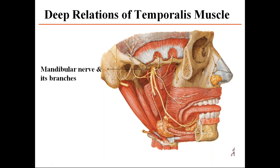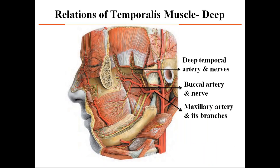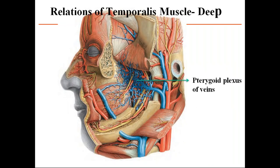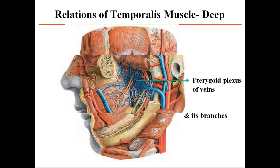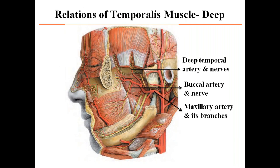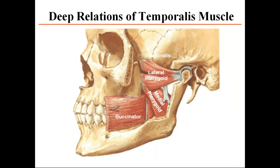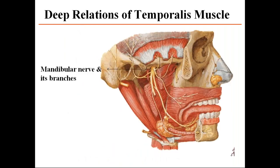After removing the maxillary artery, we see the lateral pterygoid and medial pterygoid muscles as deep relations of the temporalis. Further deep, after removing these muscles, is the mandibular nerve and its branches. So the deep relations of temporalis are: pterygoid plexus of veins, maxillary artery with its deep temporal and buccal branches, lateral pterygoid muscle, medial pterygoid muscle, and mandibular nerve and its branches.